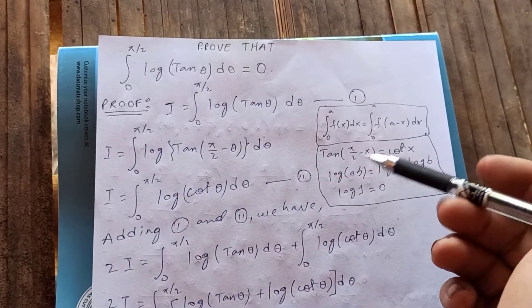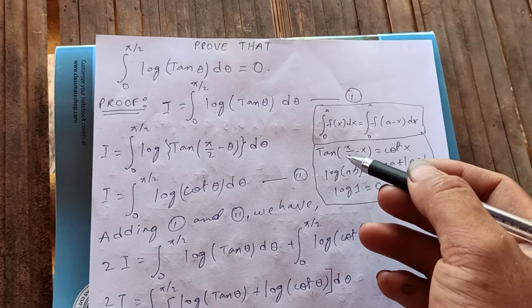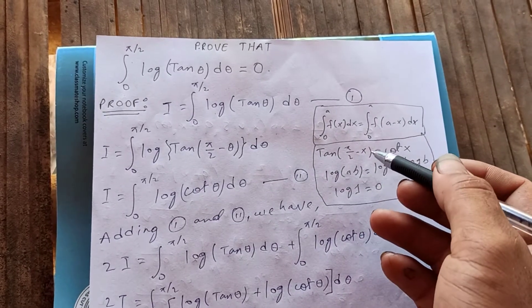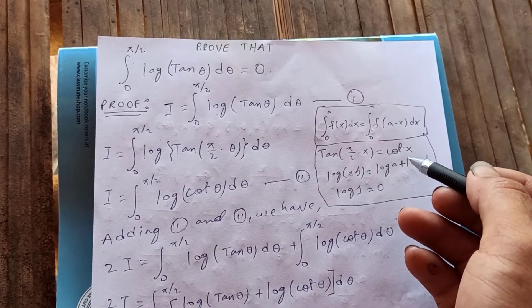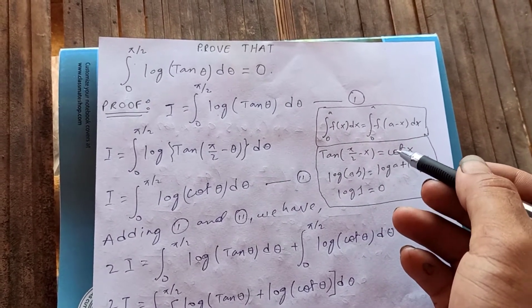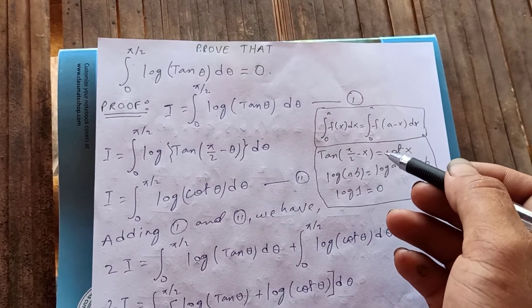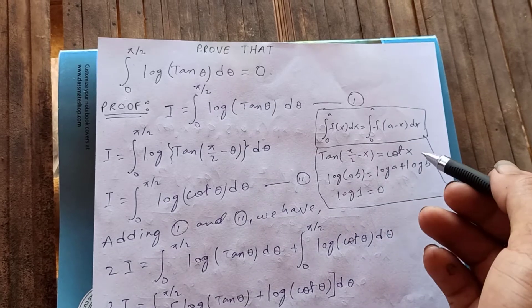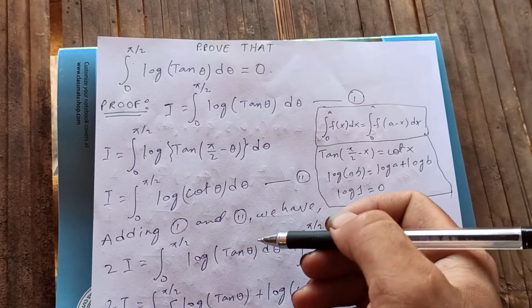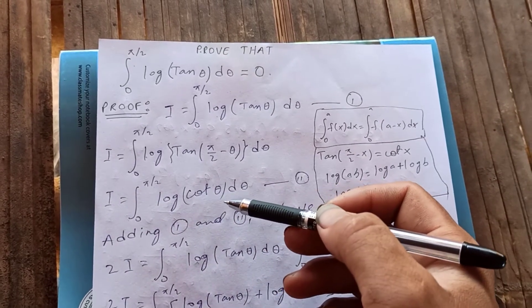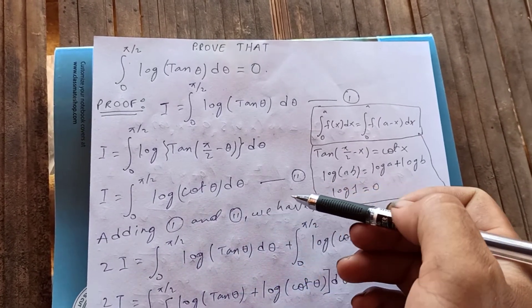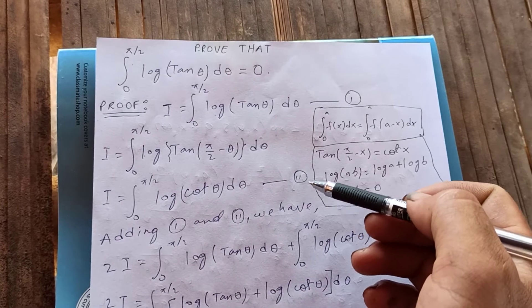We know that tan(pi/2 minus θ) is just cot θ, because tan(90 minus x) equals cot x. Therefore this becomes I equals the integral from 0 to pi over 2 of log(cot θ) dθ. Let's call this equation 2.